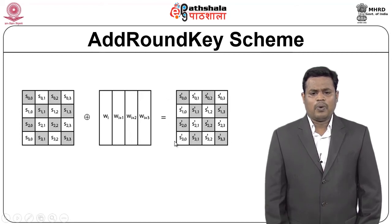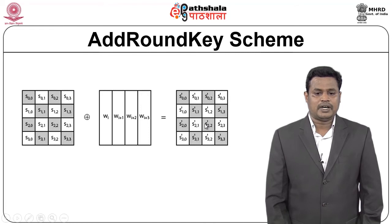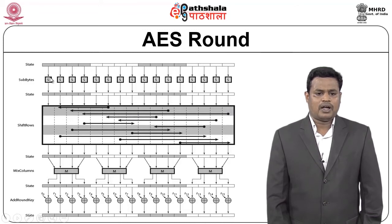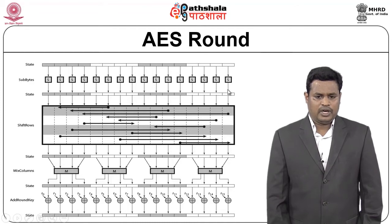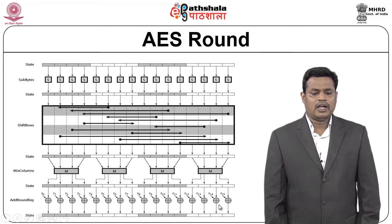This gives the output of one particular round. Assuming this is the first round, the state we see is the output of the first round. Similarly the process repeats: first the S-box substitution byte, next shift row, next mix column, and finally add round key. This process happens for n rounds. Overall: the state goes through substitution byte, then shift row, then mix column, then add round key — that is what happens inside each round.